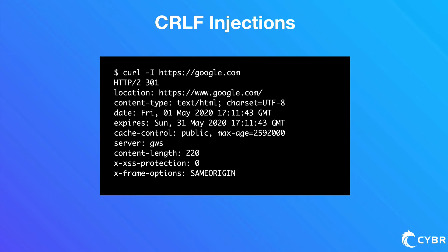CRLF injections were the third most found flaw. These can be very nasty attacks because the HTTP protocol uses CRLF character sequences to signify where one header ends and another header begins, and where headers end and website content begins. As demonstrated with headers returned by Google, understanding how these character sequences work is important for securing your application against CRLF injection attacks.